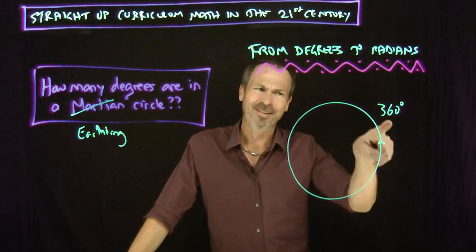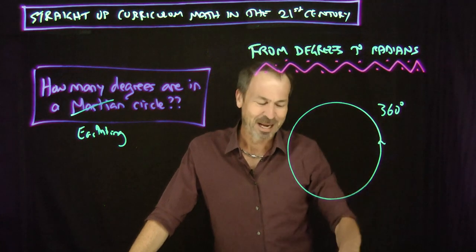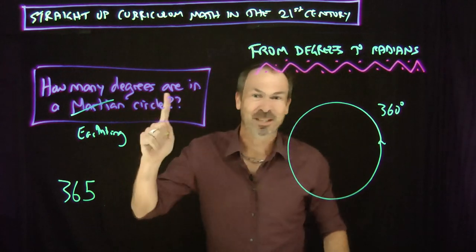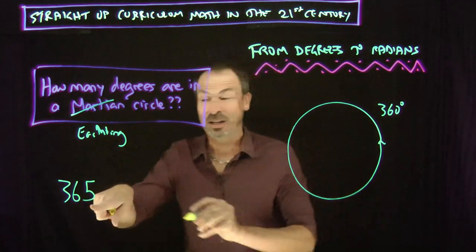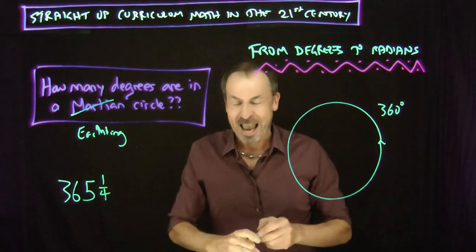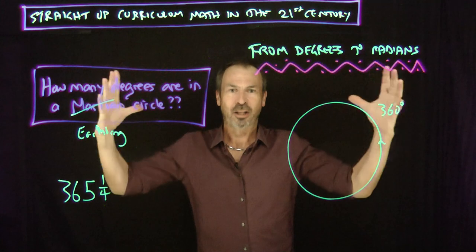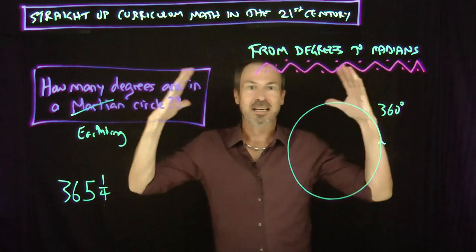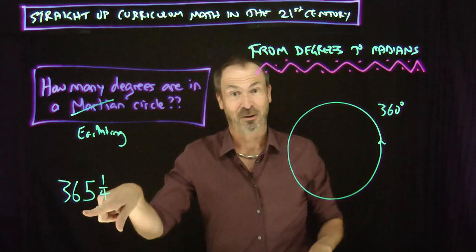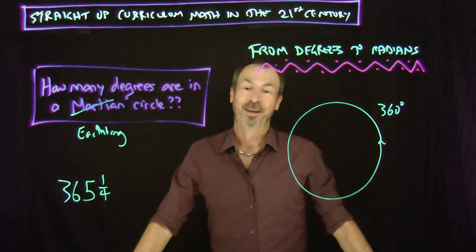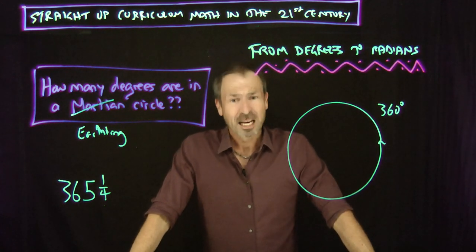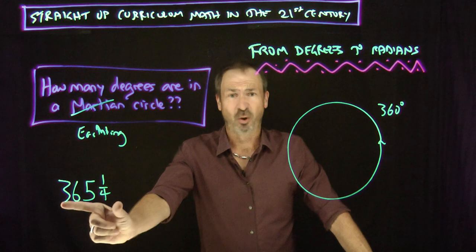And you think, hang on, 360 is not the number of days in a year. The number of days in a year is actually 365. In fact, Babylonians and Sumerians some 4,000 years ago actually knew it's not quite that number. It's actually 365 and a quarter with a little smidgen more. We should be saying there are 365 and a quarter degrees in a circle. Ugh!